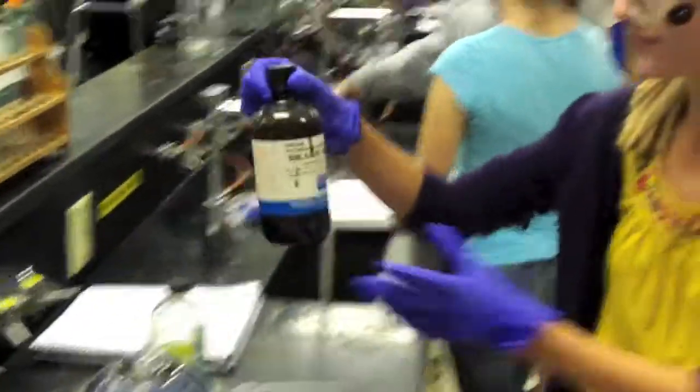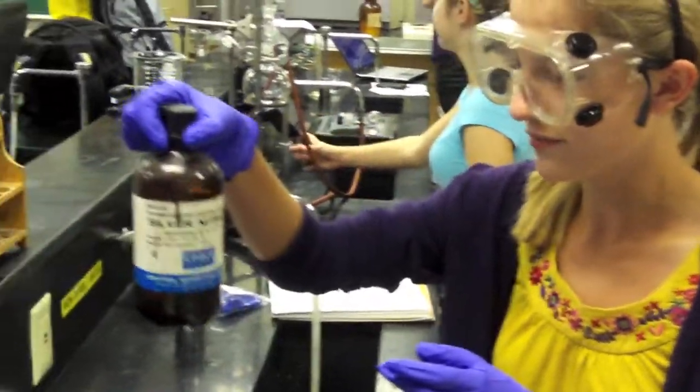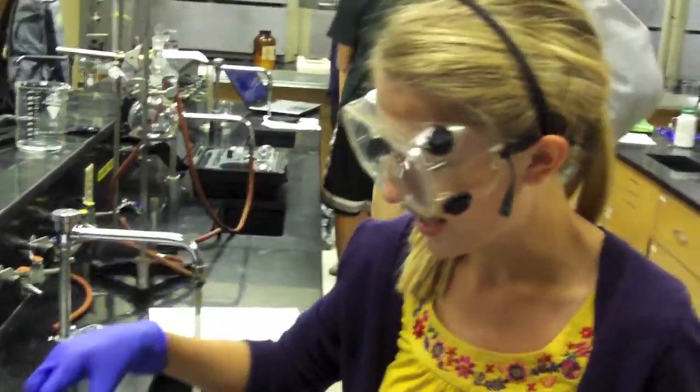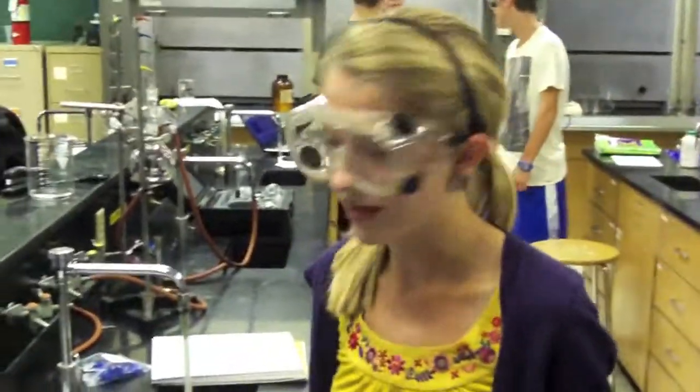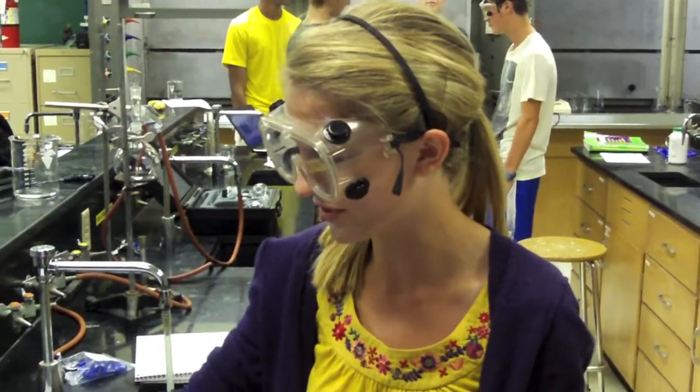Today we're using silver nitrate, which is a clear mixture, and potassium chromate, which is lime green. You want to be careful and wear gloves because these substances are very harmful if they get on your skin. The silver can make your skin gray.